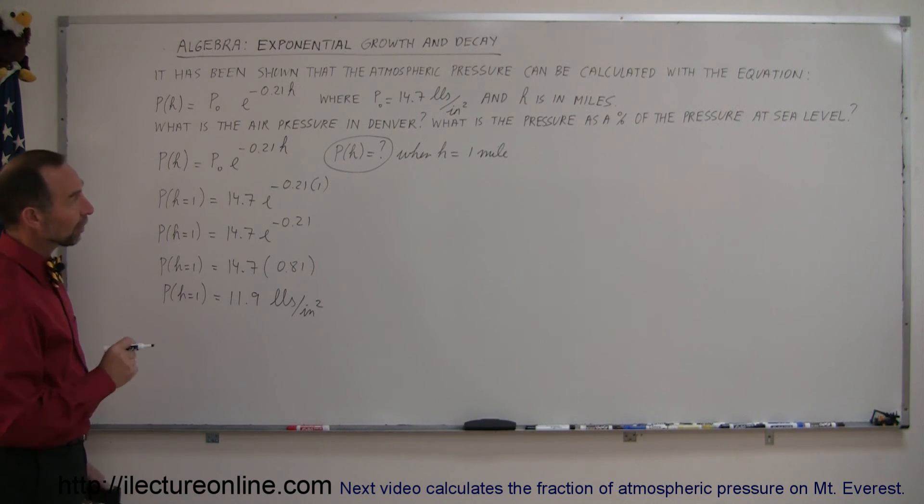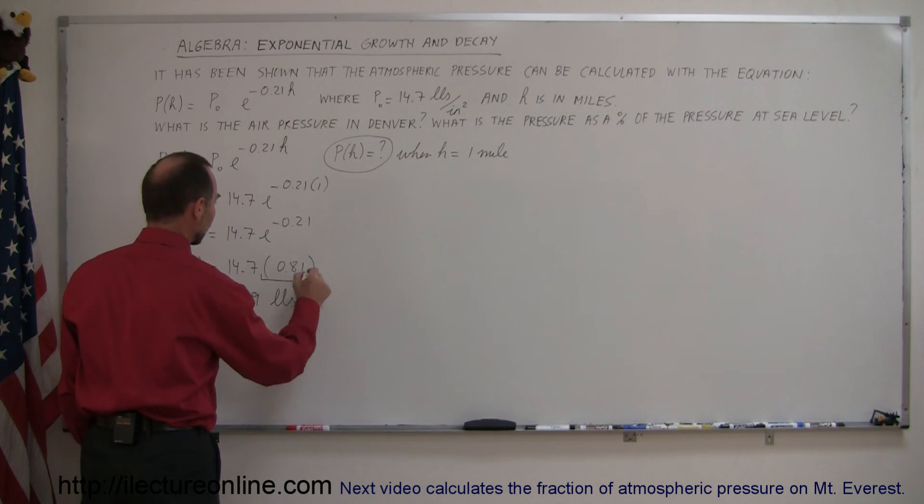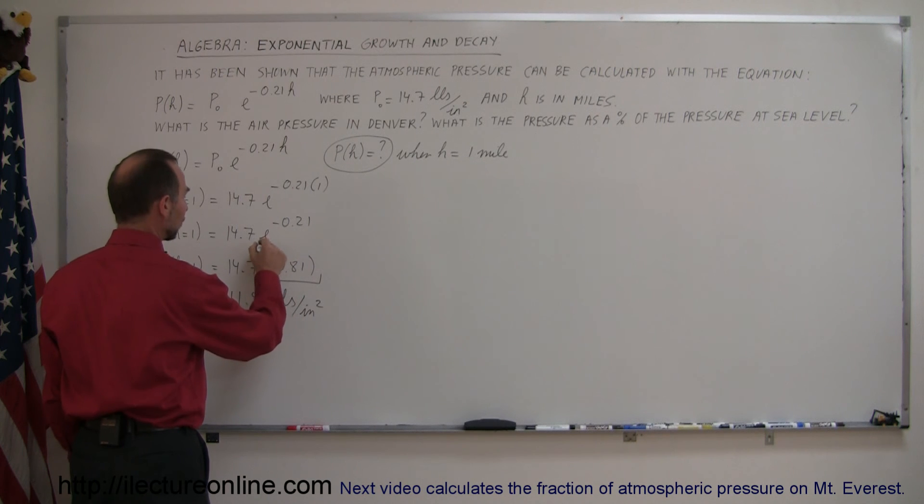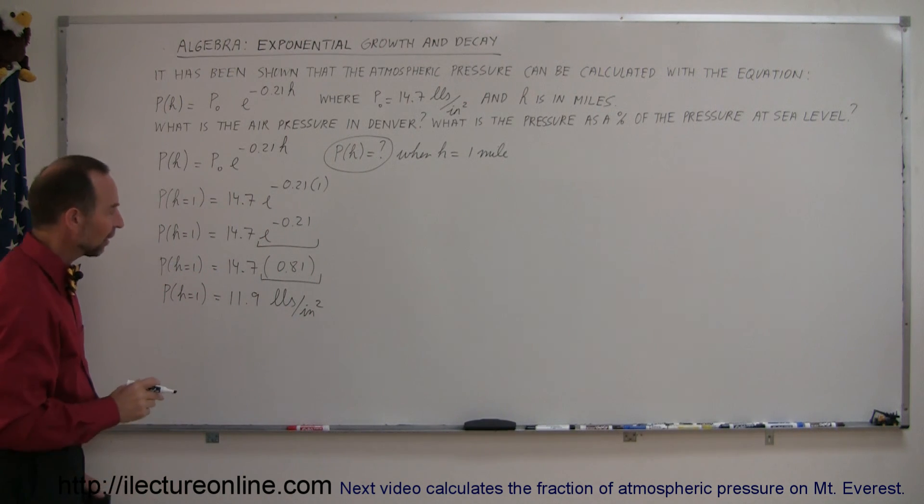But the second part of the question says what is the pressure as a percent of the pressure at sea level, and that's what this number is right here. This expresses the percentage. So the e to the minus 0.21 is the percent of the air pressure at sea level.